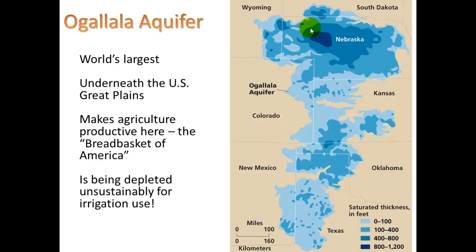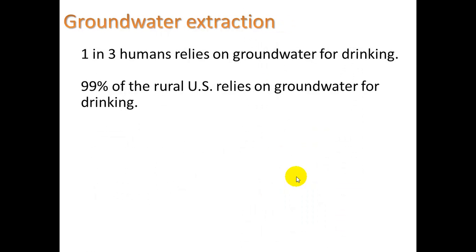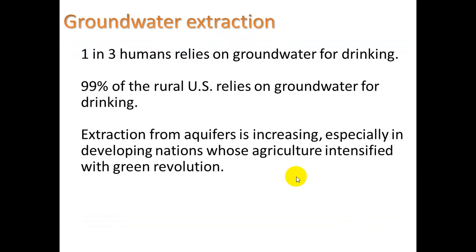This aquifer is being depleted unsustainably for irrigation use. Looking at charts comparing 1980 to 1995, orange areas represent drops of up to 40 feet in only 15 years — the water table has decreased that much. Darker areas are almost completely gone. This is important because one in three humans rely on groundwater for drinking, and 99% of the rural U.S. relies on groundwater. Extraction from aquifers is increasing, especially in developing nations whose agriculture intensified with the Green Revolution.